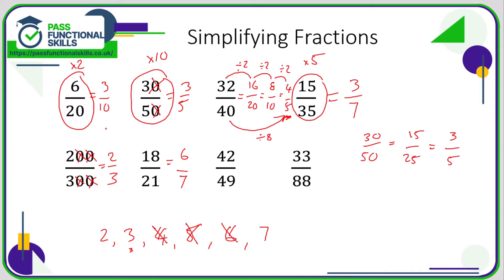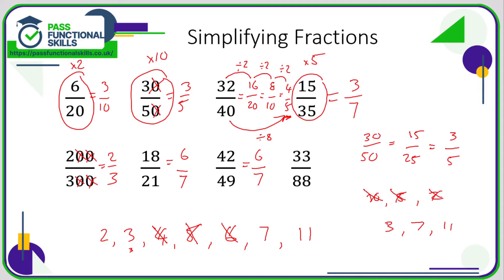So let's look at seven. If it's not a ten, a five, or a two, try three, then seven, then eleven — basically you're just looking at odd prime numbers. You probably don't need to worry beyond eleven; they're not going to make it that tricky. Forty two and forty nine can both be divided by seven: forty two divided by seven is six, forty nine divided by seven is seven. For thirty three and eighty eight — can't divide by ten, five, two, three, or seven. Try eleven: thirty three divided by eleven is three, eighty eight divided by eleven is eight. So the answer is three eighths.